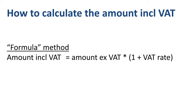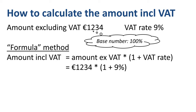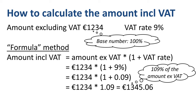You might say: you're making it easy on yourself by starting with a round number of 100 euros. Okay, here's the same formula with different numbers. The amount excluding VAT is 1,234 euros and the VAT rate is 9%. 1,234 euros times (1 plus 9%) equals 1,234 euros times 1.09, which is 1,345 euros and 6 cents. With a VAT rate of 9%, the amount including VAT is 109% of the amount excluding VAT.